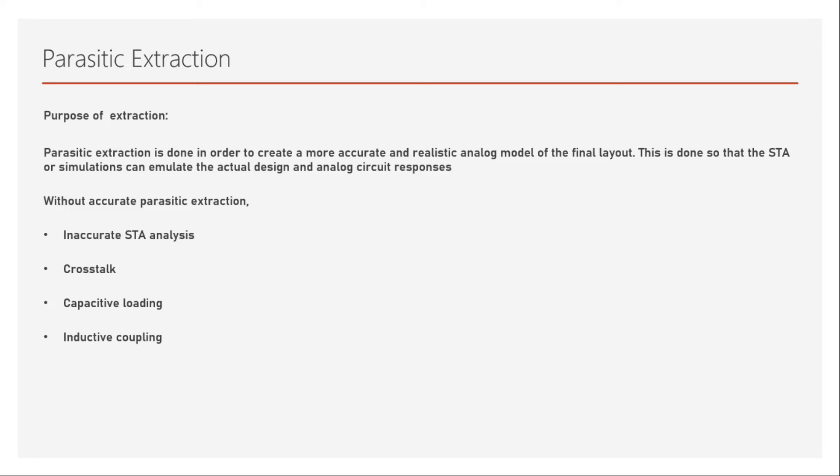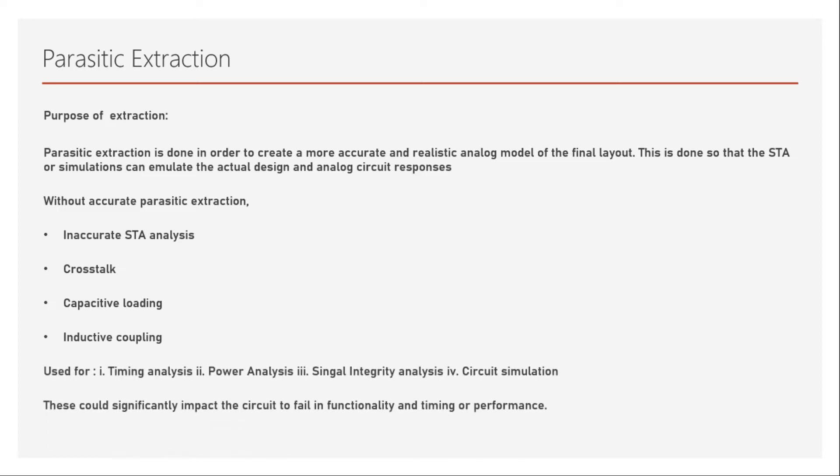Without parasitic extraction, we also cannot properly analyze crosstalk, which can lead to huge problems in modern technology nodes. The capacitive loading will not be accurate, and inductive coupling can occur in certain designs. Parasitic extraction is mainly used for timing analysis — delay values are critical — and also for power analysis, where resistance and capacitance are used to determine power drop and heat generation.